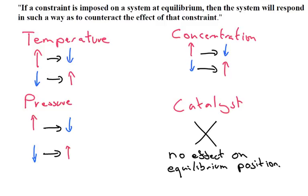If you increase the pressure on the chemical system, the equilibrium position will move to try and reduce the pressure. Oppositely, if you try and reduce the pressure, the equilibrium position will move to try and increase it.